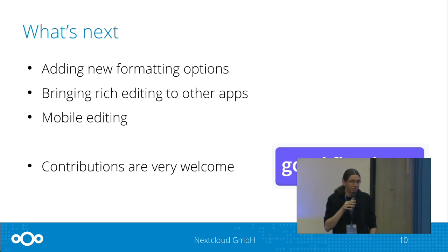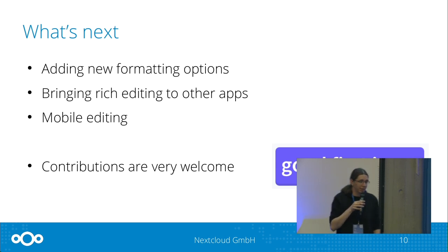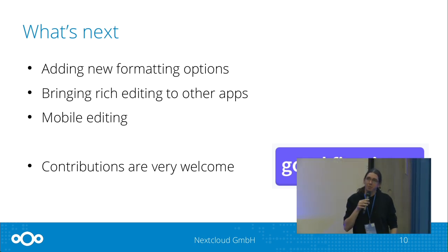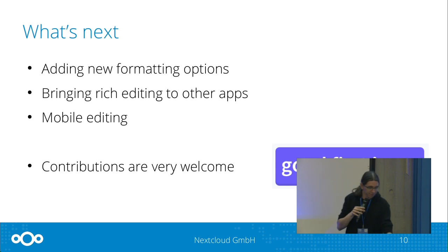We started the tech stack but still have plenty of features to implement in the future — different formatting options with markdown as a basis, inserting images with improvements, and bringing rich editing to other apps like the Notes app. We also want mobile editing similar to Collabora. As usual, Text is fully open source on GitHub. We have plenty of good first issues, so if anyone wants to start contributing, feel free to check that out.